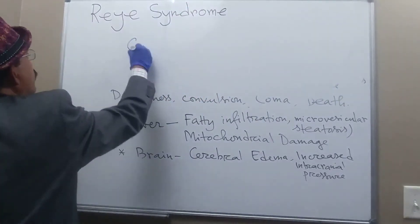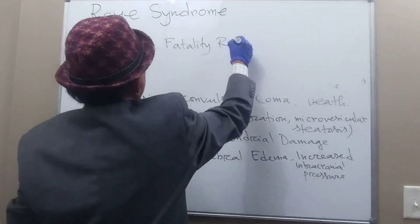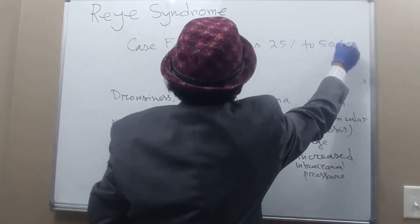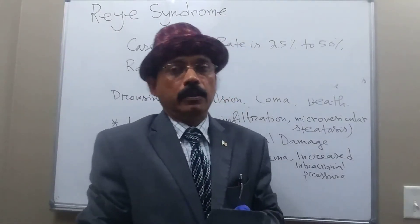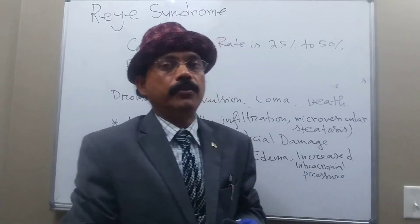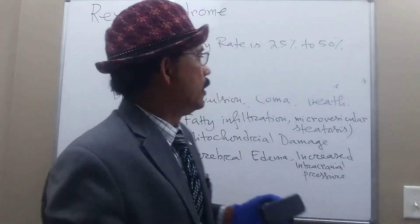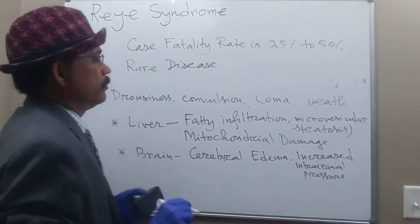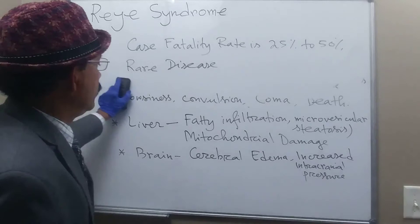The case fatality rate is around 25% to 50%. It is a rare disease — not very common in the United States. In the 1970s there were about 300 to 600 cases per year, but after the mid-1980s the number decreased to less than 20 cases per year in the United States.